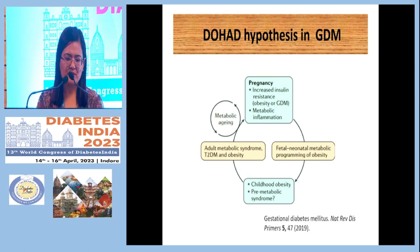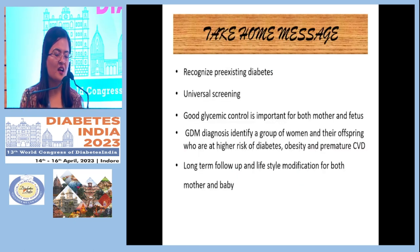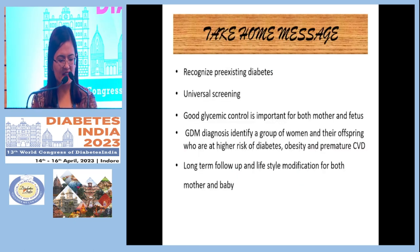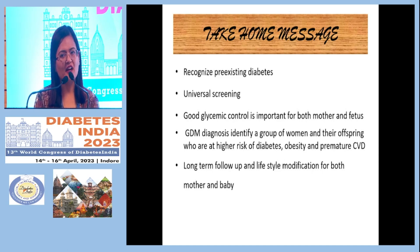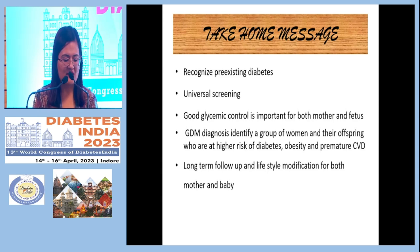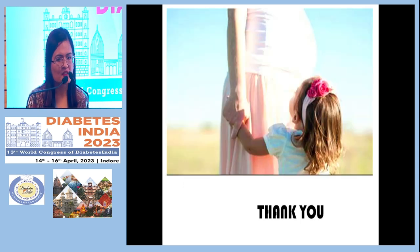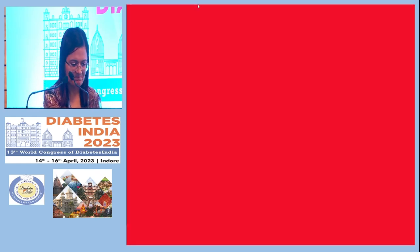To summarize: recognize diabetes in pregnancy, screen universally, maintain good glycemic control for mother and fetus. GDM identifies patients at high risk of future diabetes and premature cardiovascular disease in their children. Long-term follow-up and lifestyle management are most important for both mother and baby.